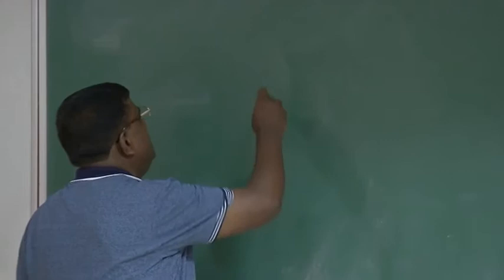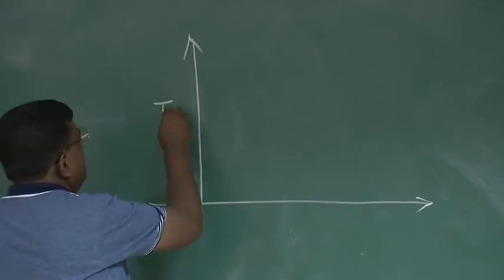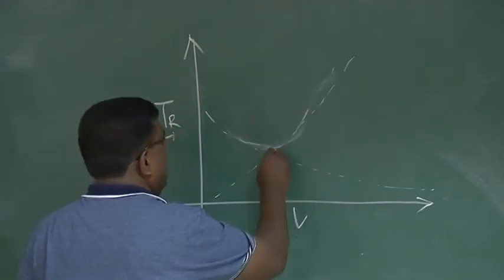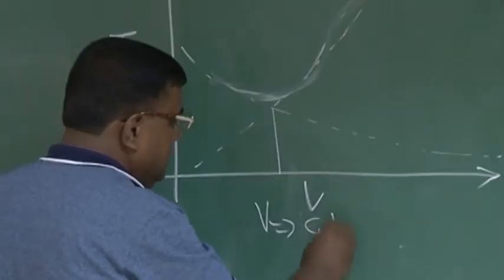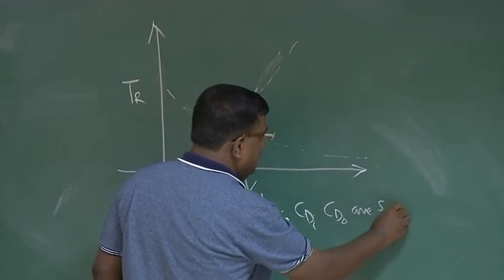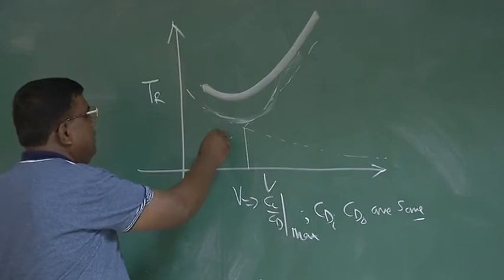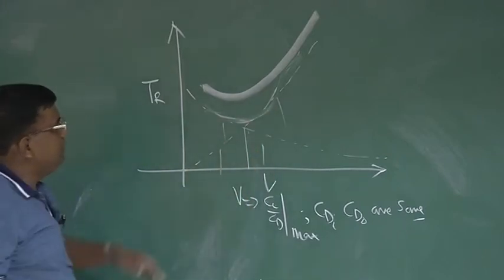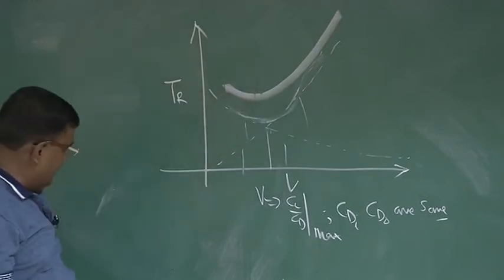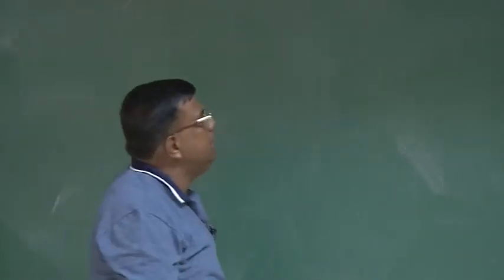Before I continue, I want to mention that one figure I have drawn is not strictly to scale. I have drawn the thrust required curve, and while discussing we are talking about induced thrust and parasite thrust. At the point where V is for CL/CD max, we know that CDi and CD0 are the same. So this graph, if correctly drawn, should show that because these two graphs get added up at every point, and here both are equal, the total should be doubled at that point — not exactly as drawn. I am sure you have understood this and taken it as it is supposed to be taken.